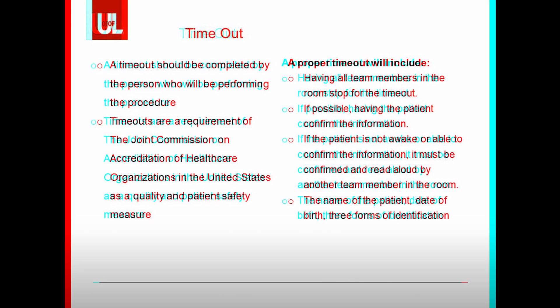Prior to every procedure, a timeout should be completed by the person performing the procedure. Timeouts are a requirement of the Joint Commission on Accreditation of Healthcare Organizations as a quality and patient safety measure. All team members in the room should stop for the timeout. If possible, have the patient confirm the information; if not, another team member must confirm and read it aloud. At minimum, confirm the patient's name, the procedure to be performed, and which side or site. Additional items include necessary equipment, patient allergies, and physically marking the site. Separate timeouts should occur for each procedure if multiple are planned, and any significant delay should prompt another timeout.